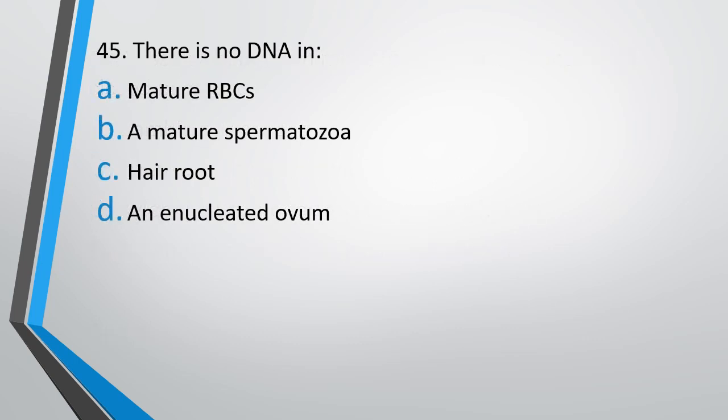Question number 45. There is no DNA in: Option A: Mature RBC. Option B: A mature spermatozoa. Option C: Hair root. Option D: Enucleated ovum. The correct answer is Option A — in a mature RBC, there is no DNA, as red blood cells lose their nucleus during maturation.